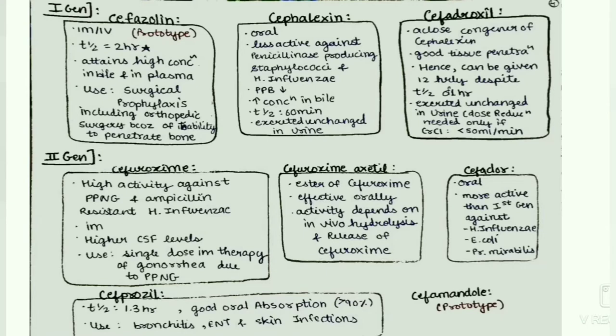Next, cephalexin. It is orally given, less active against penicillinase-producing staphylococci and H. influenzae. Plasma protein binding is low. It has high concentration in the bile. T-half is 60 minutes and it is excreted unchanged in the urine.